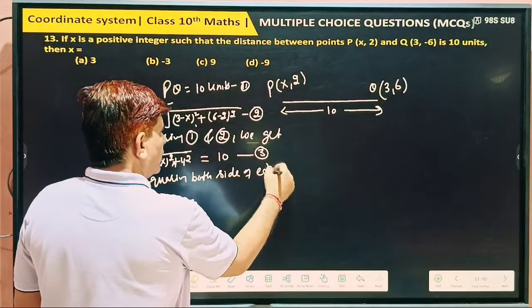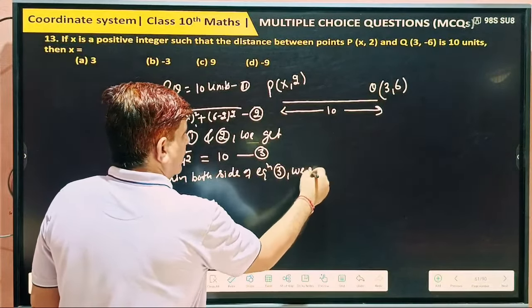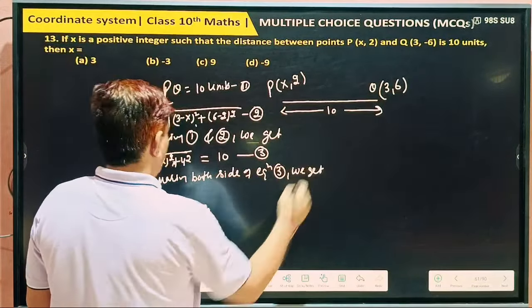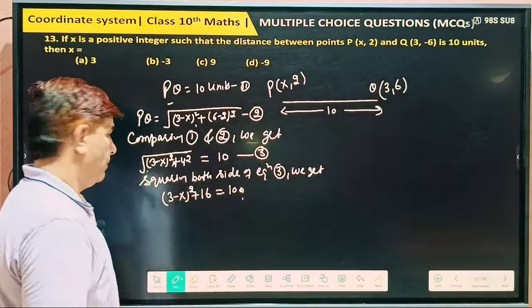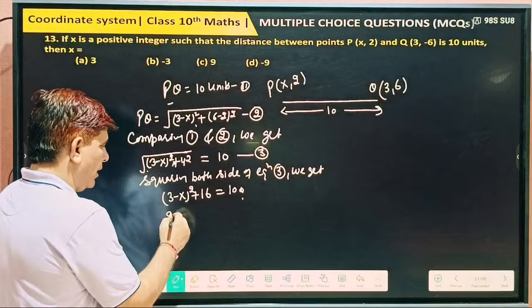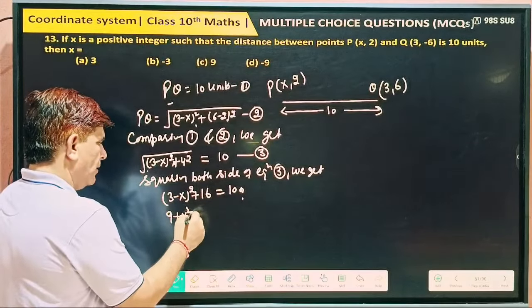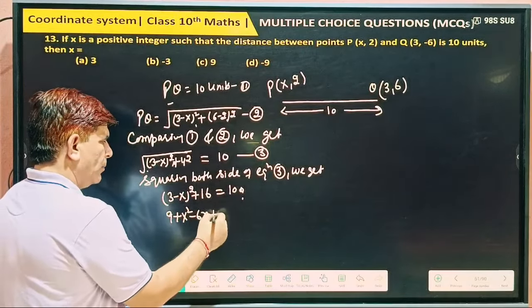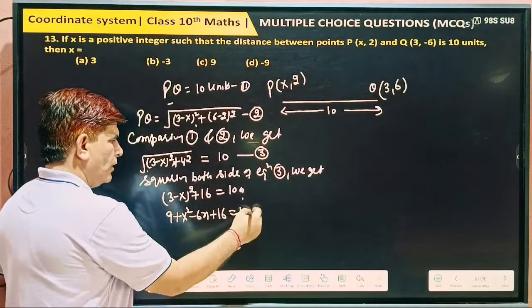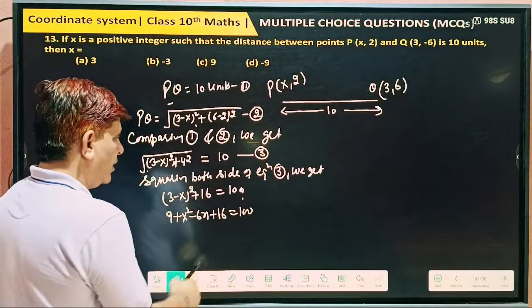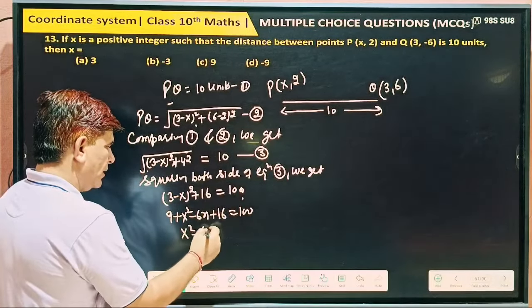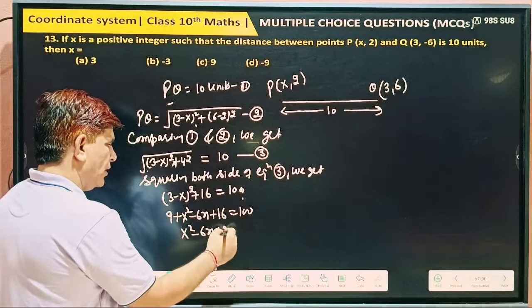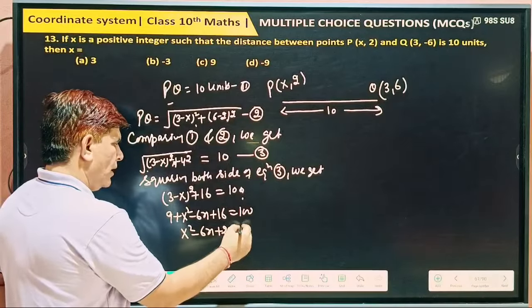Squaring both sides of equation 3 we get 3 minus x whole square plus 16 is equal to 100, square of 10. So this we can write 9 plus x square minus 6x plus 16 equal to 100.